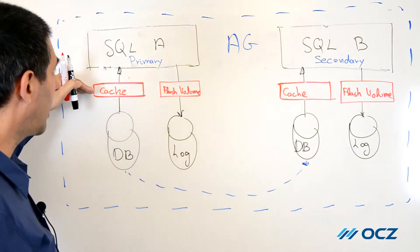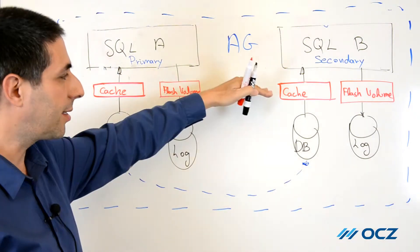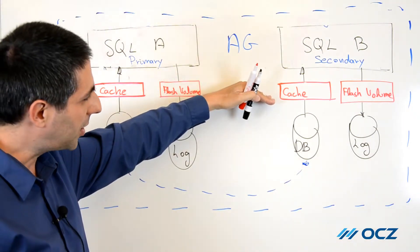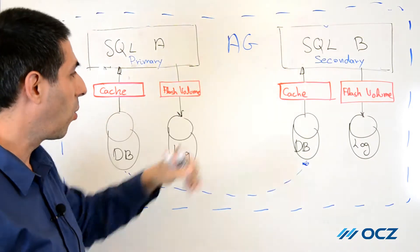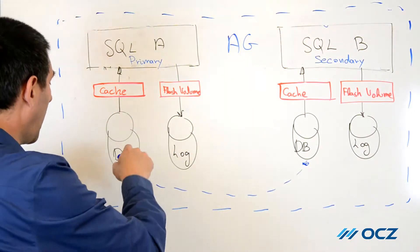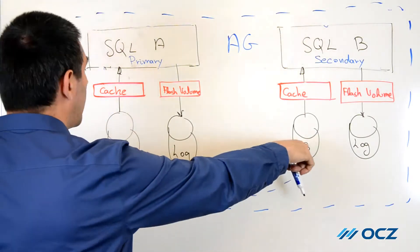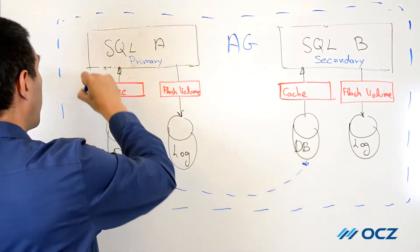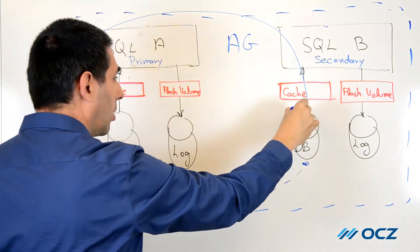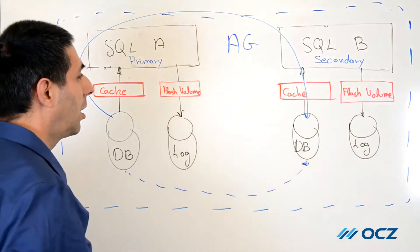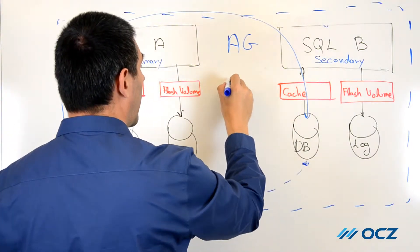If we place the ZDXL in the primary server and ZDXL in the secondary servers, the data coming from the primary database to the secondary database will go through the cache because we have a policy called CacheOnWrite.